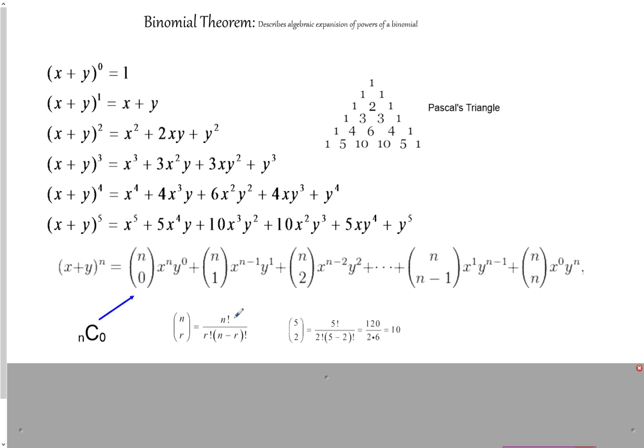And by definition, nCr is defined as n factorial divided by r factorial times n minus r factorial. So I have an example here. So 5C2 is 5 factorial divided by 2 factorial and then divided by 5 minus 2 factorial, which equals to 10.